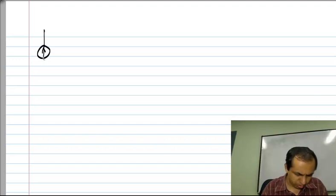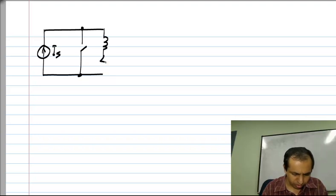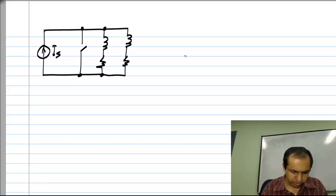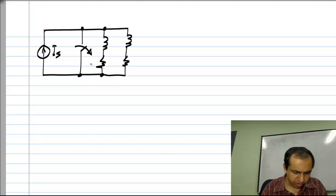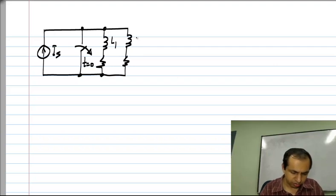We will look at an example of a circuit with inductors where the inductor currents can undergo instantaneous changes. We have a current I_S and a switch. As mentioned before, switching action can be equivalent to stepping the values of currents or voltages in the circuit. This switch is initially short-circuited and opens at t = 0. We also have two inductors in the circuit.